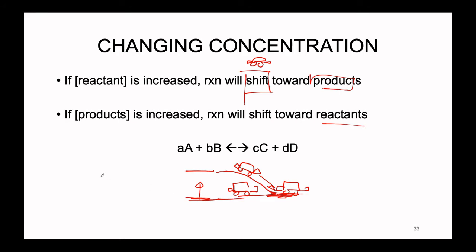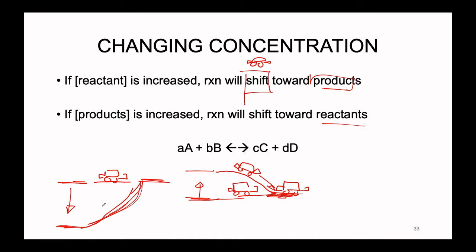Let's look at the opposite situation. If we decrease the amount of reactant, the track becomes lower on the reactant side. Our hot wheels car stationed on this track will roll down towards the reactant state. In other words, if we decrease the concentration of a reactant, according to Le Chatelier's principle, the reaction will spontaneously shift in reverse to create more reactant and restabilize to re-reach equilibrium.